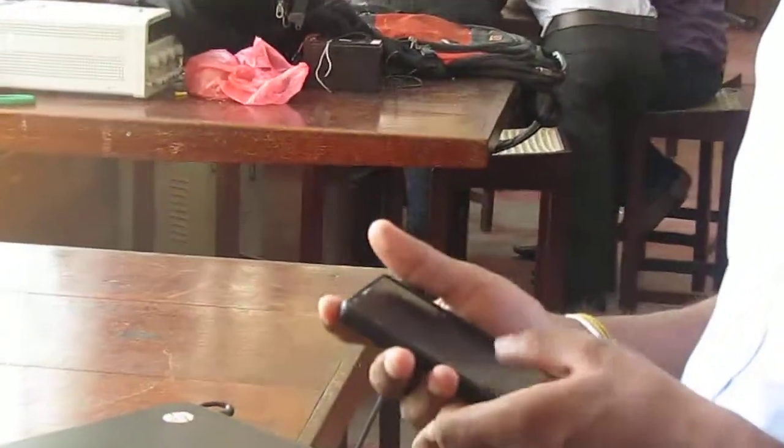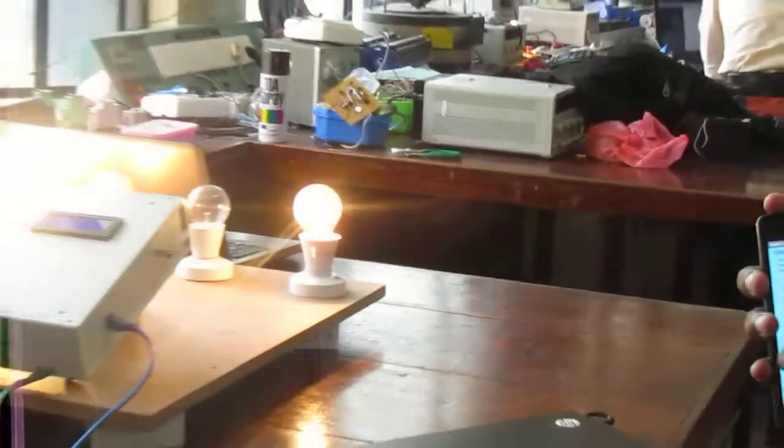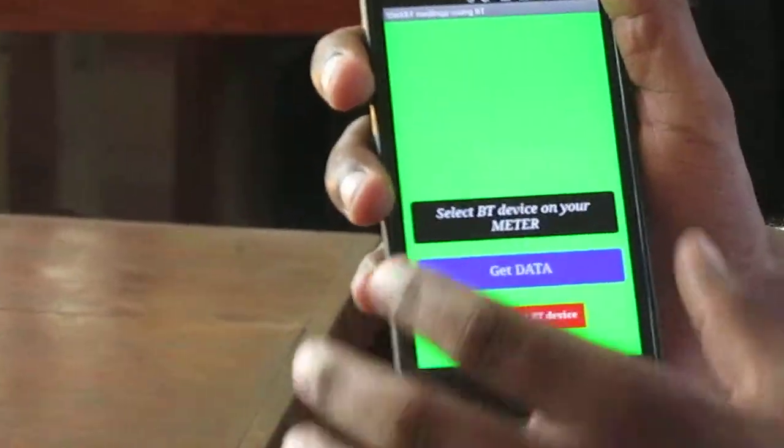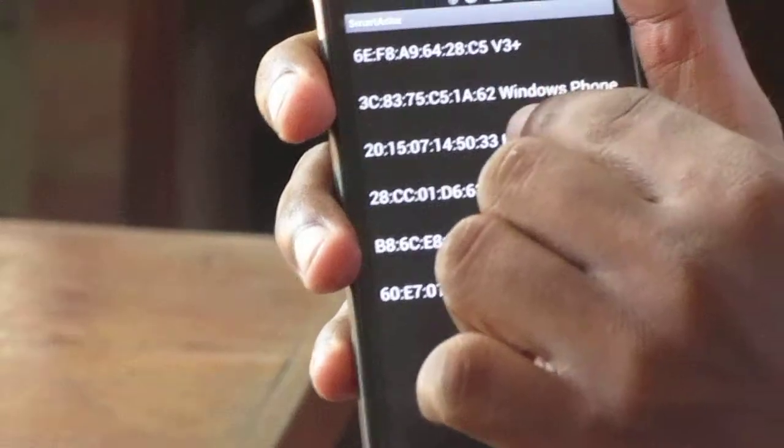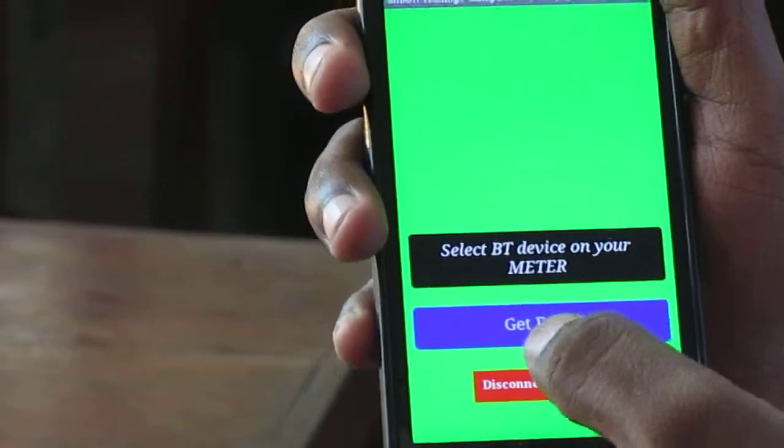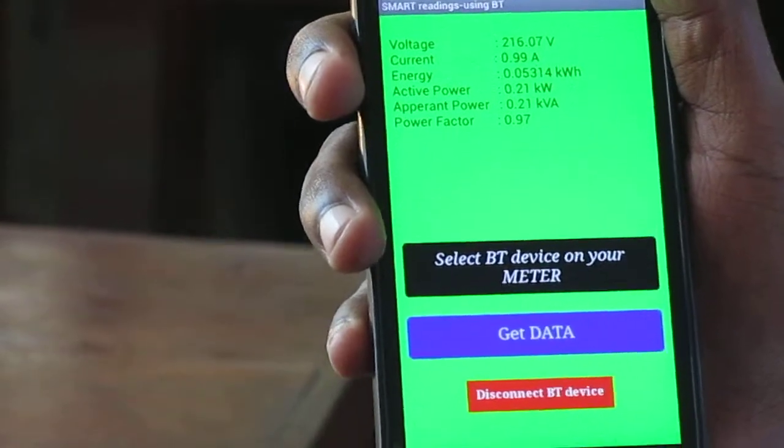We will consider the smart reading option. First, we have to connect with the virtual device, the smart meter. After connecting with the virtual device, we can get the data to be stored and displayed.